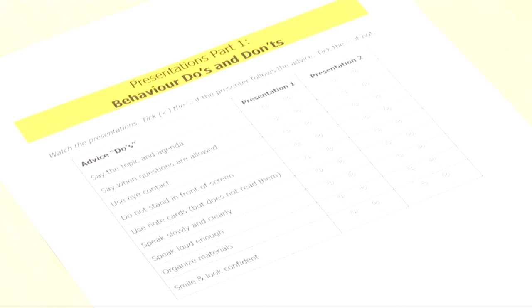Before you watch Jo's first presentation, look at the handout: Behaviors, Do's and Don'ts. You will see two columns — Presentation 1 and Presentation 2. Each one has a smiling face or a sad face. Tick where she does something well or does something badly.